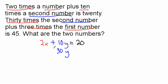And then we're adding it to 3 times the first number. So whenever it says 3 times the number, that means 3 multiplied by that number, so we call it 3x. And that one is going to equal 45.